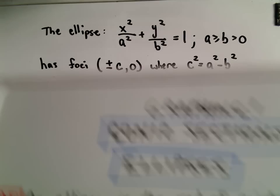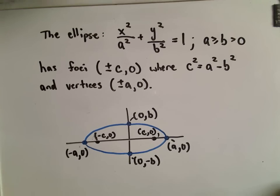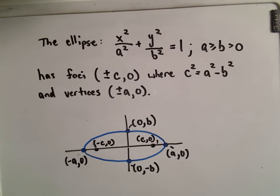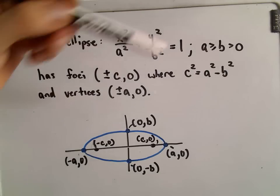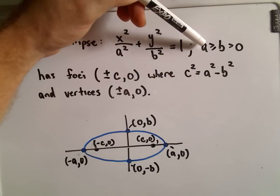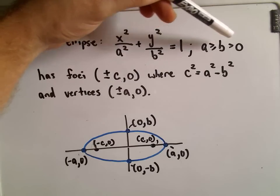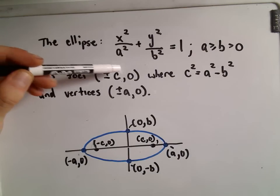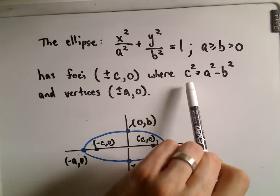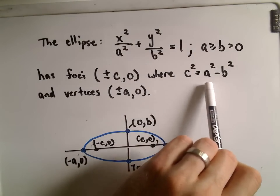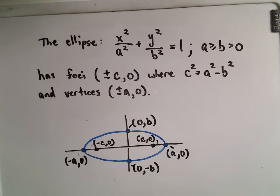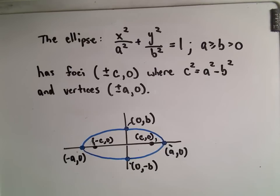The equation of an ellipse in standard form is x squared over a squared plus y squared over b squared equals 1. This is the standard form centered at (0, 0). We assume that a squared is greater than or equal to b squared, and both numbers are bigger than 0. The foci are at (±c, 0), where c squared equals a squared minus b squared. The vertices are at (±a, 0).